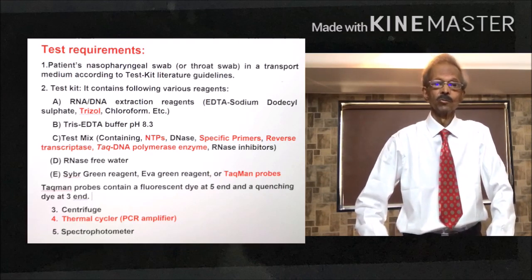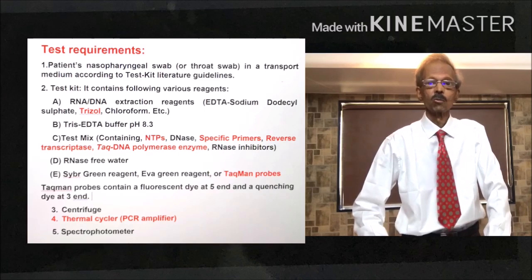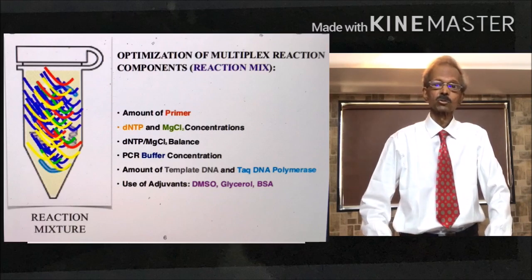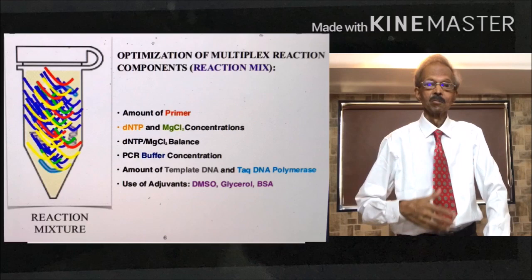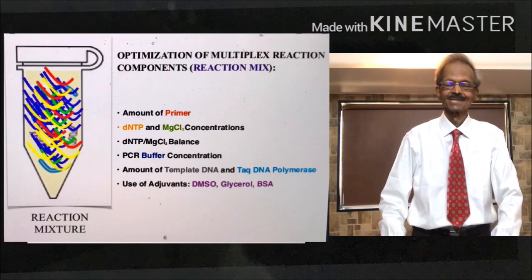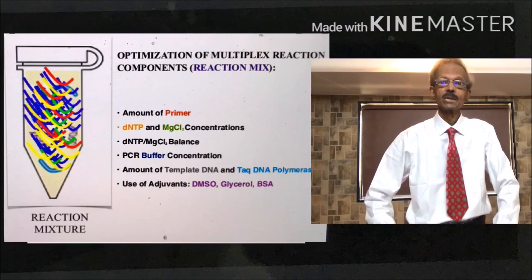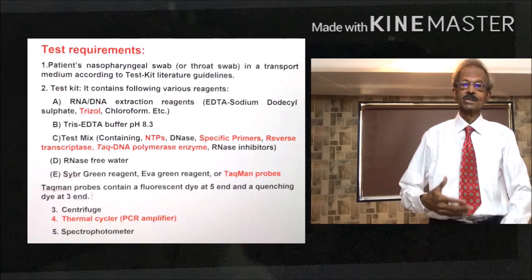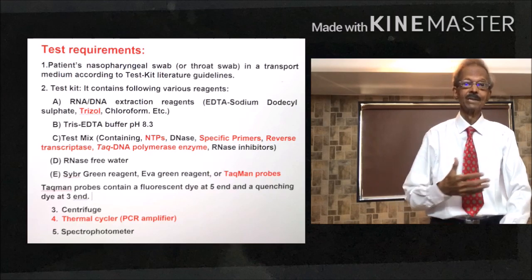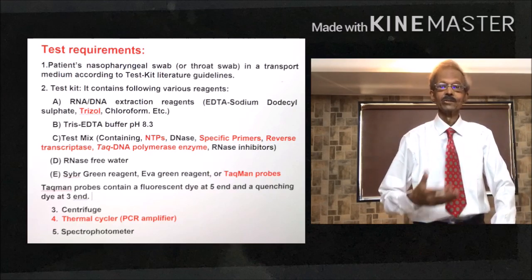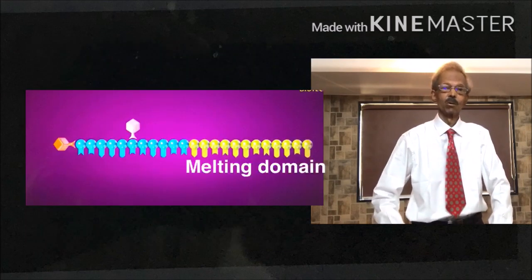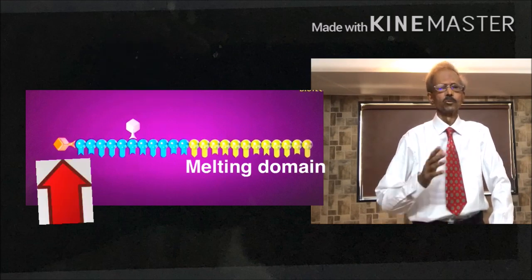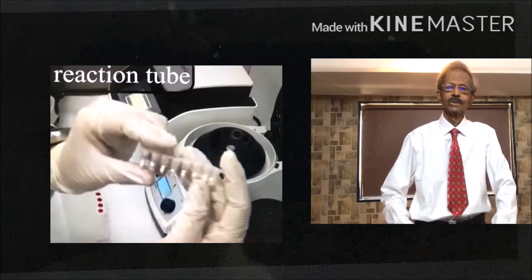TRS and EDTA buffer pH 8.3, test master mix which contains DNAs, DNA primers, reverse transcriptase enzyme, TAC DNA polymerase enzyme and RNA inhibitors. Then RNA free water and cybergreen reagent, evagreen reagent or TaqMan probes. In this case, I have explained the use of TaqMan probes. TaqMan probes contain a fluorescent dye at 5 prime end and a quenching dye at 3 prime end.